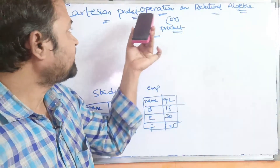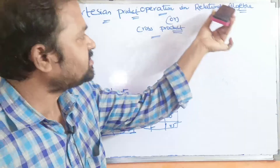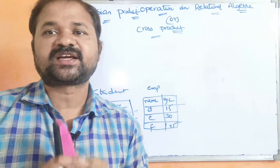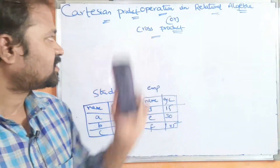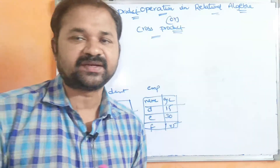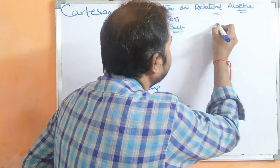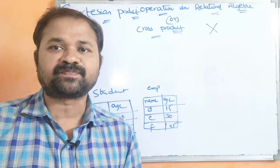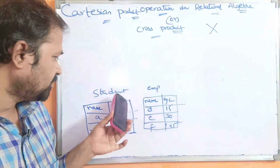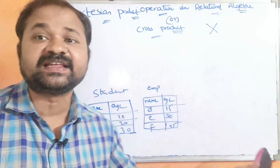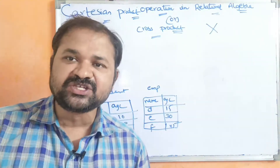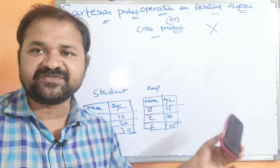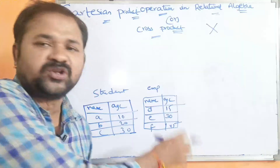Let us discuss the Cartesian product operation in relational algebra. Cartesian product can also be called as cross product, and it is denoted by the cross mark symbol. It is mainly useful in order to combine one relation with another — specifically, to combine each tuple of the first relation with all the tuples of the second relation.